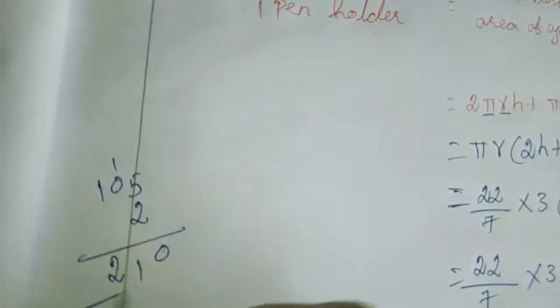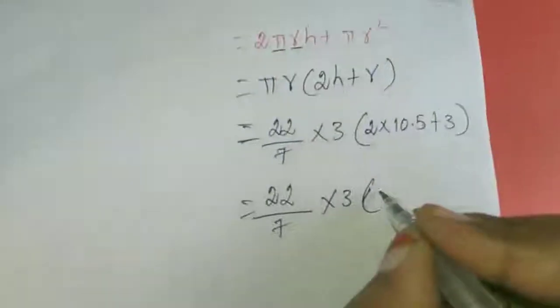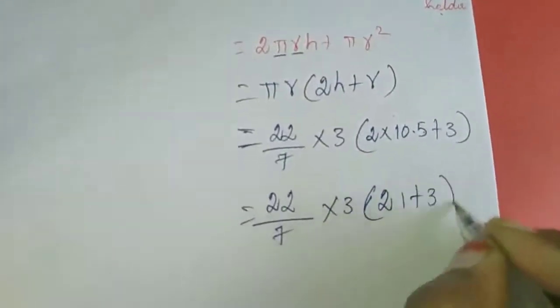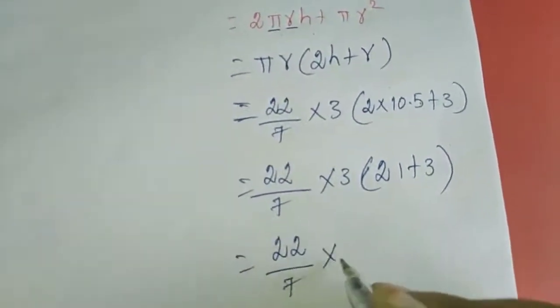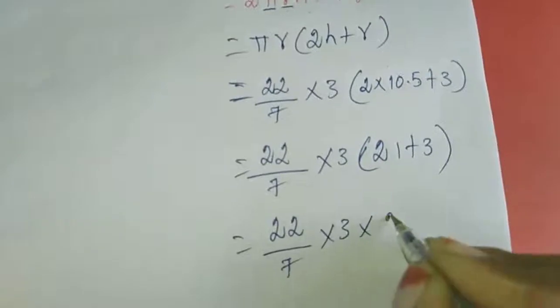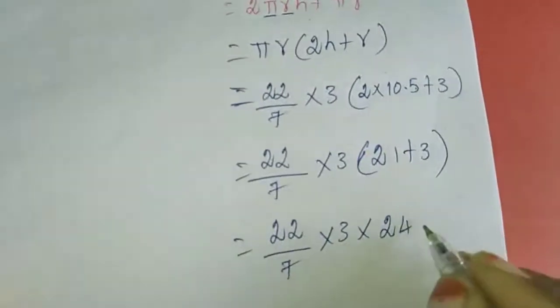Bracket pulled: 2 into 10.5 is 21. Now 22 by 7 into 3 into 24. This is for one pen holder.